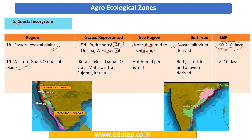Zone 19 is Western Ghats and Coastal Plains, covering states from Kerala up to Daman and Diu — including Kerala, Goa, Maharashtra, Gujarat, and Daman and Diu. The climate here is hot per-humid, and the soil is a mixture of red soil, lateritic soil, and alluvium-derived soil. The LGP here is more than 210 days — notably different from the eastern coastal plains — so do not confuse their LGPs.